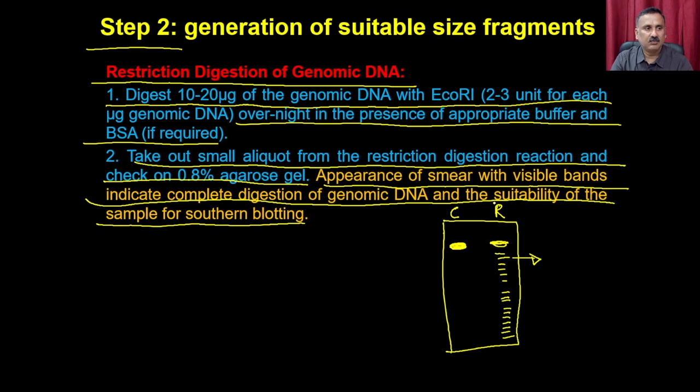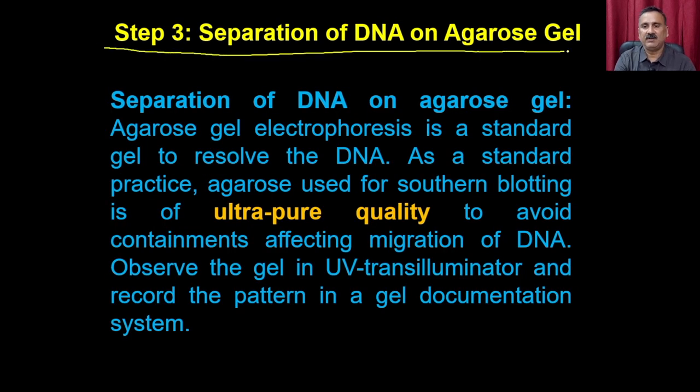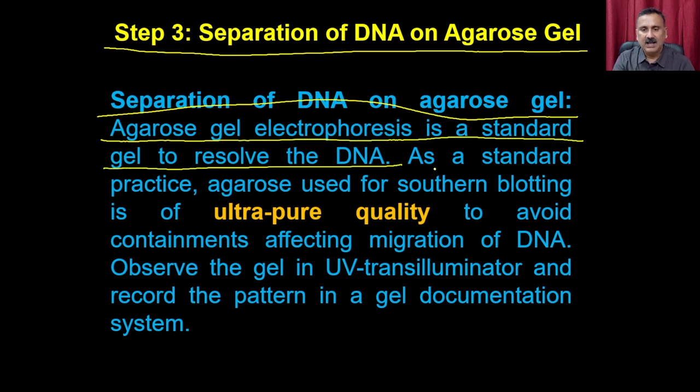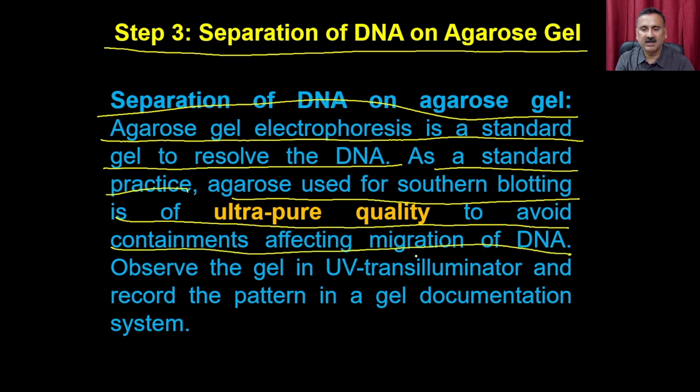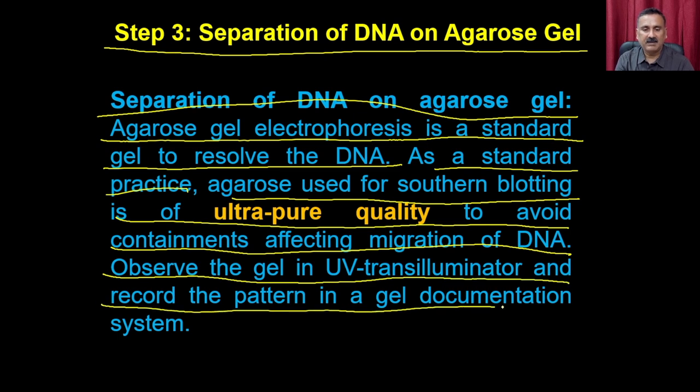You can then move on to step 3: separation of DNA on the agarose gel. Agarose gel electrophoresis is the standard method to resolve the DNA. Ultra-pure quality agarose is used for southern blotting to avoid contaminants affecting DNA migration. Observe the gel in the transilluminator and record the pattern in a gel documentation system. For demonstration, students in the lab will show how to perform agarose gel electrophoresis and observe the gel under the transilluminator.